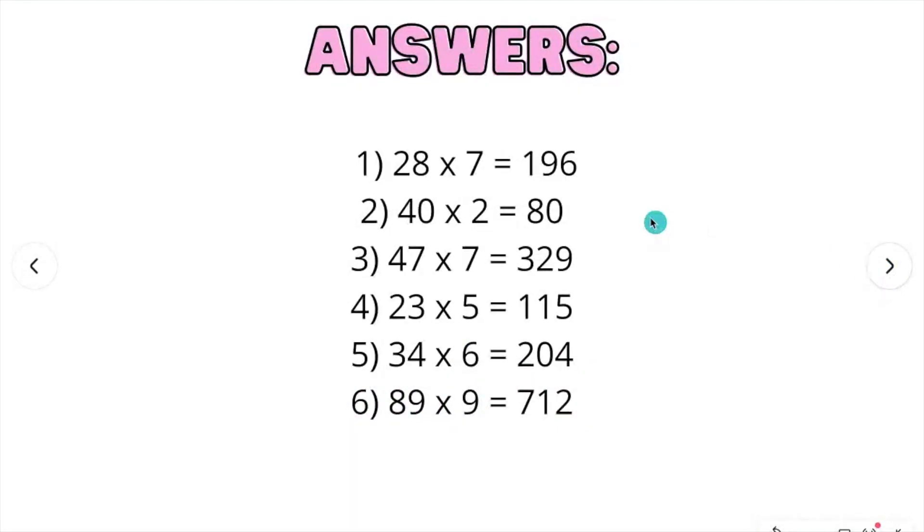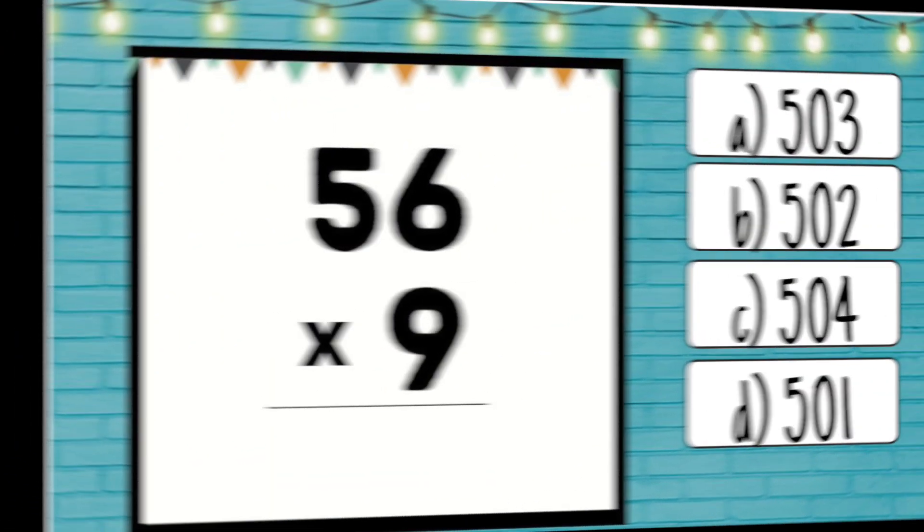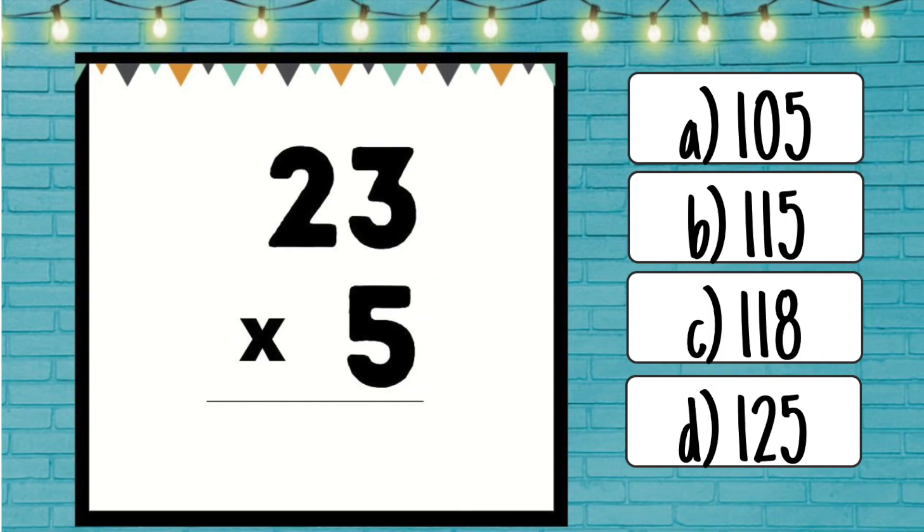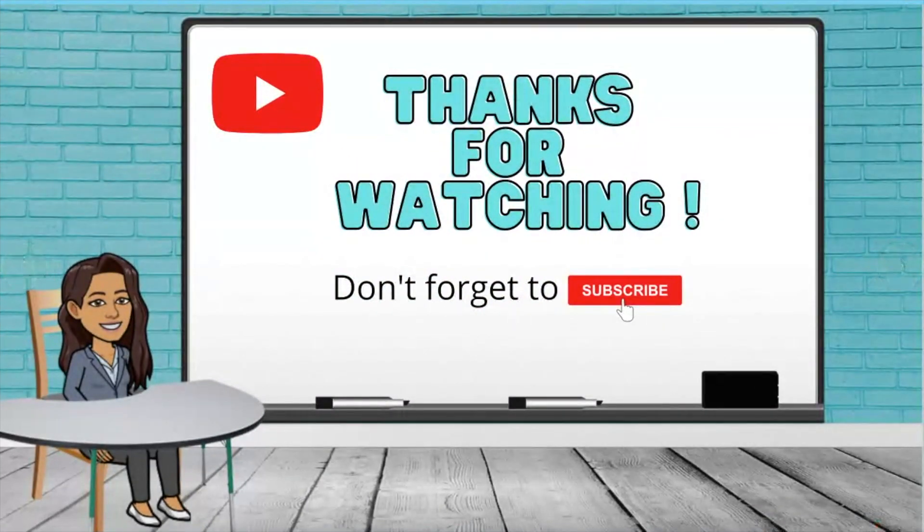Here are the answers. 28 times 7 equals 196. 40 times 2 equals 80. 47 times 7 equals 329. 23 times 5 equals 115. 34 times 6 equals 204. And lastly, 89 times 9 equals 712. Thank you and have a great day.